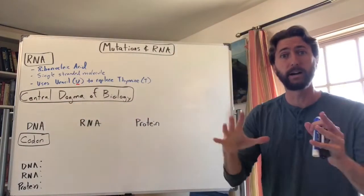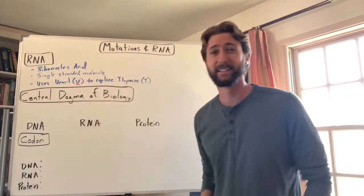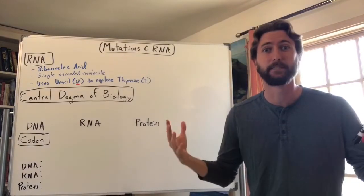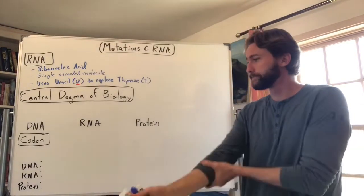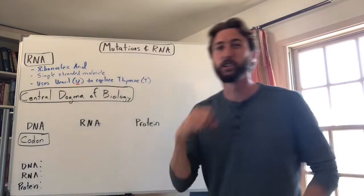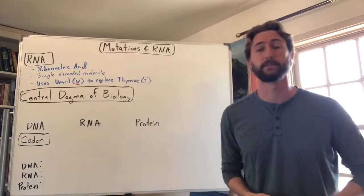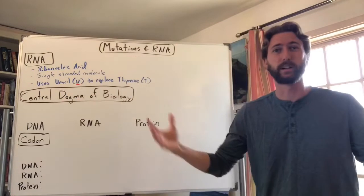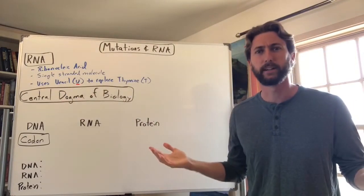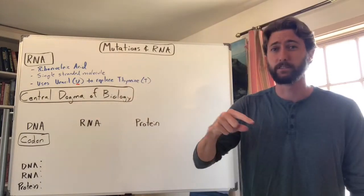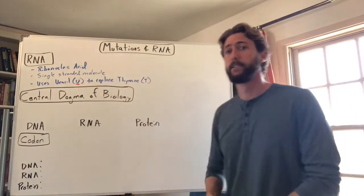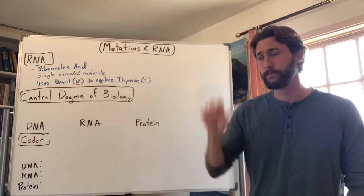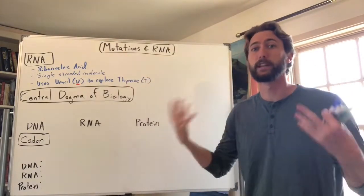That's important because we need to talk about something called the central dogma of biology. The central dogma is a big idea in biology — more or less it means nothing really happens in life unless proteins are made. In order for your genes to be expressed in your phenotype, proteins have to be made. DNA has the instructions, but instructions don't do anything on their own — something needs to actually build the organism.